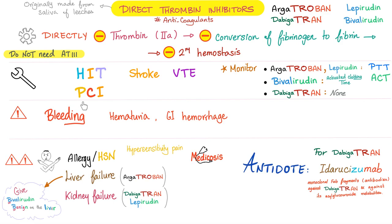Indications of direct thrombin inhibitors: HIT, PCI (percutaneous coronary intervention), stroke, and venous thromboembolism. How do we monitor them? Argatroban is monitored using PTT, bivalirudin using ACT (activated clotting time), and dabigatran requires no monitoring at all.